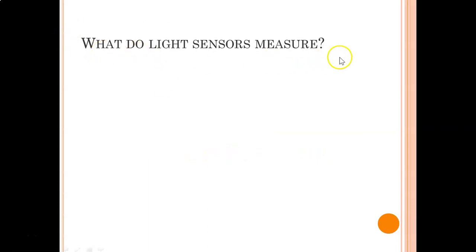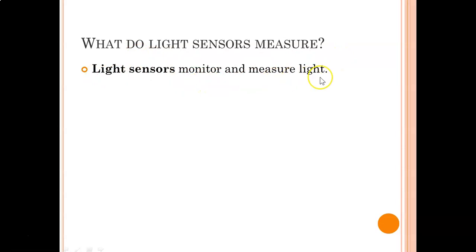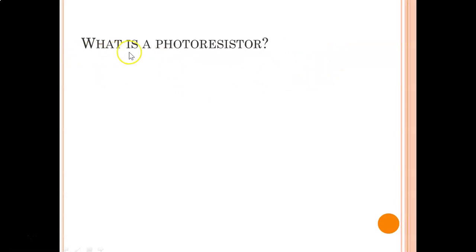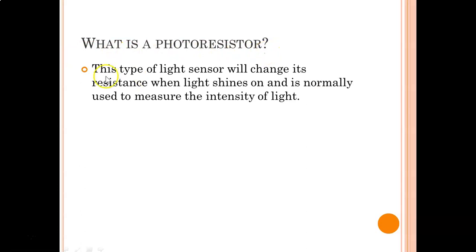What do light sensors measure? Light sensors monitor and measure light. A photoresistor is a type of light sensor that changes its resistance when light shines on it and is normally used to measure the intensity of light. We'll look at an example of how a photoresistor might be used in a system such as a traffic system.